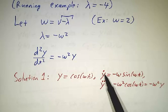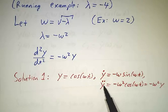And here I've used the dot notation, where dot means a time derivative. So y dot means dy/dt, and y double dot means the second derivative of y with respect to t. So that's the solution.